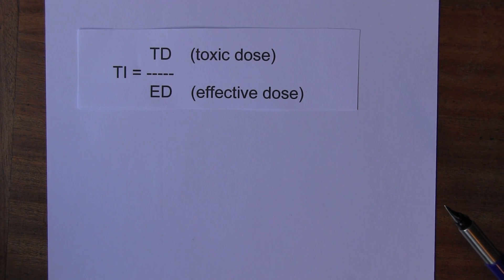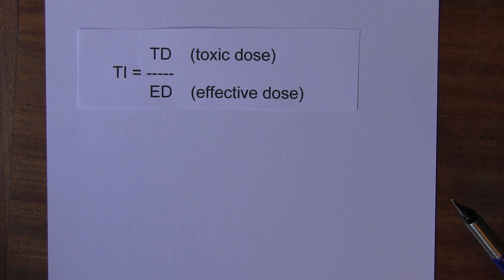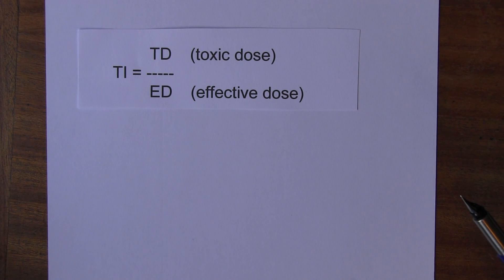A high or wide therapeutic index is good for safety — it means the drug has low toxicity and a good safety profile. A low or narrow therapeutic index is more risky. So-called NTI drugs — narrow therapeutic index drugs — have a narrow therapeutic window because the drugs are more toxic.